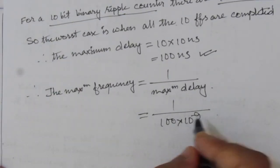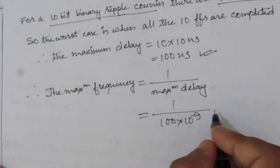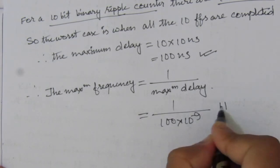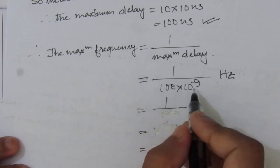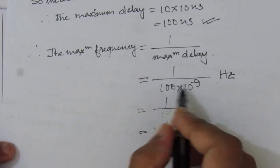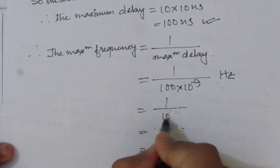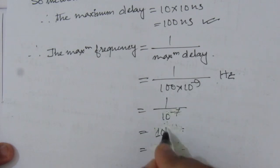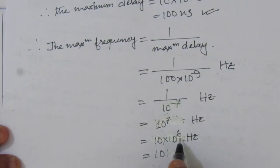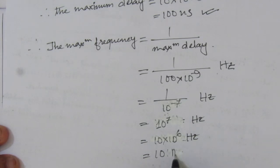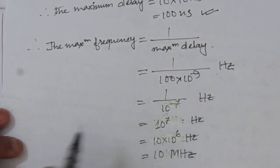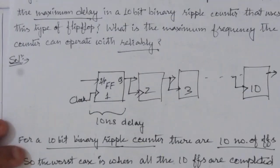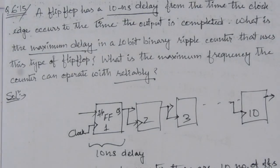The maximum frequency = 1 / (100 × 10⁻⁹). Since 100 = 10², we get 1 / 10⁻⁷ = 10⁷ Hz, which equals 10 × 10⁶ Hz = 10 megahertz. Therefore, the maximum frequency of operation of this 10-bit counter is 10 MHz.